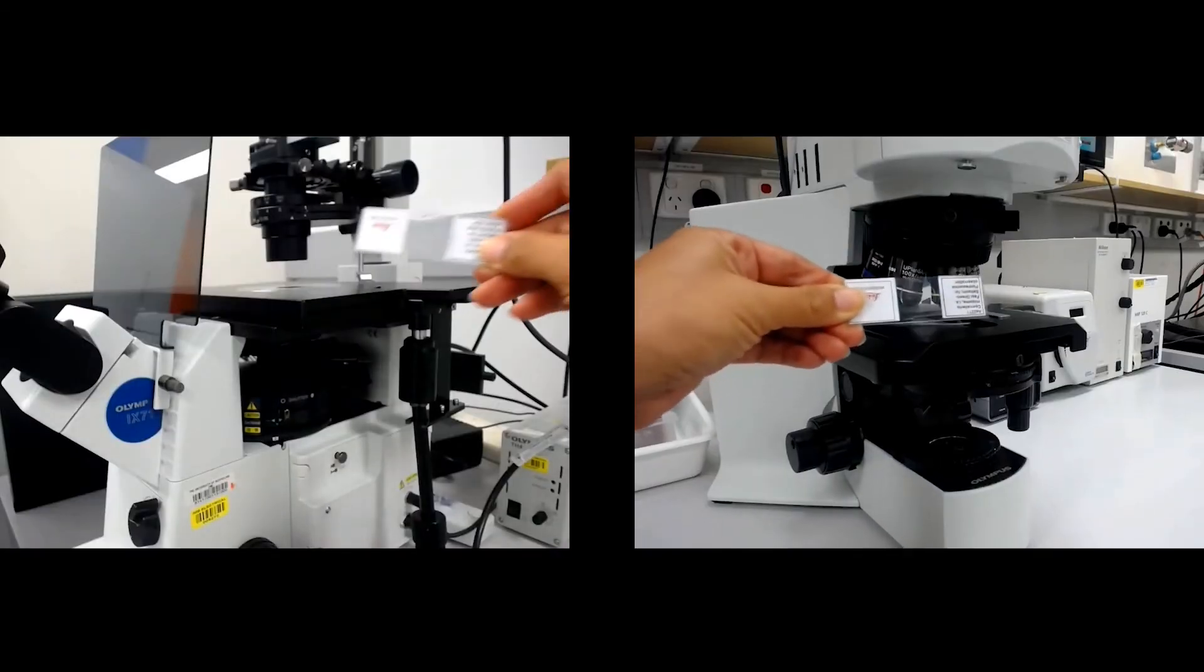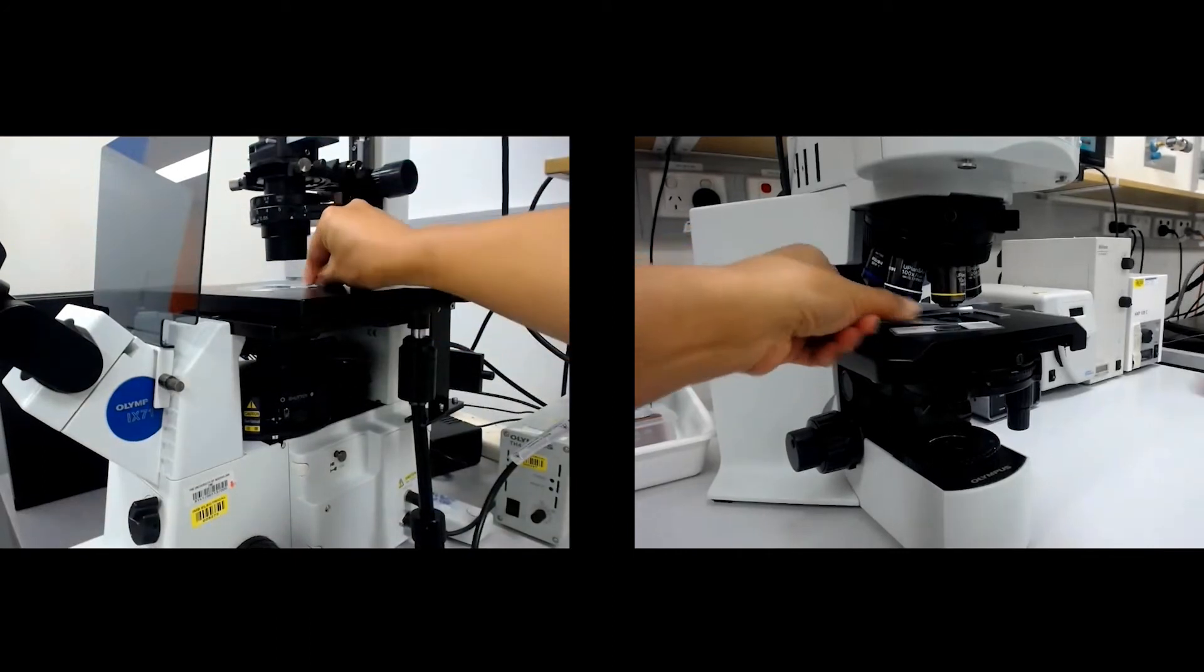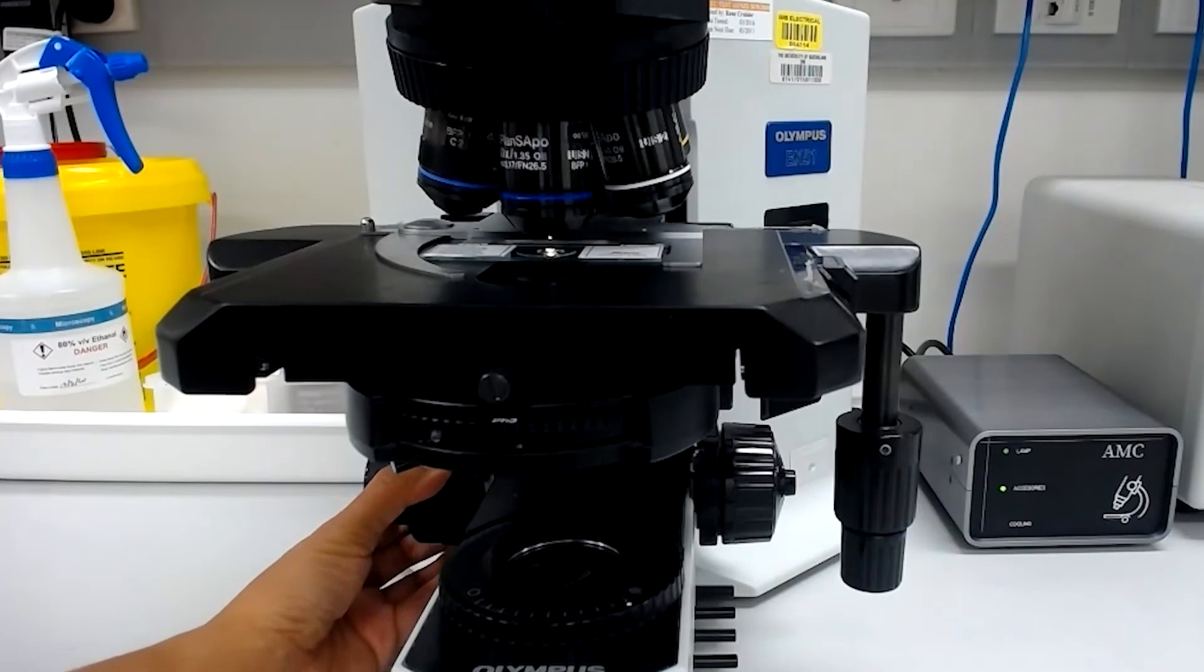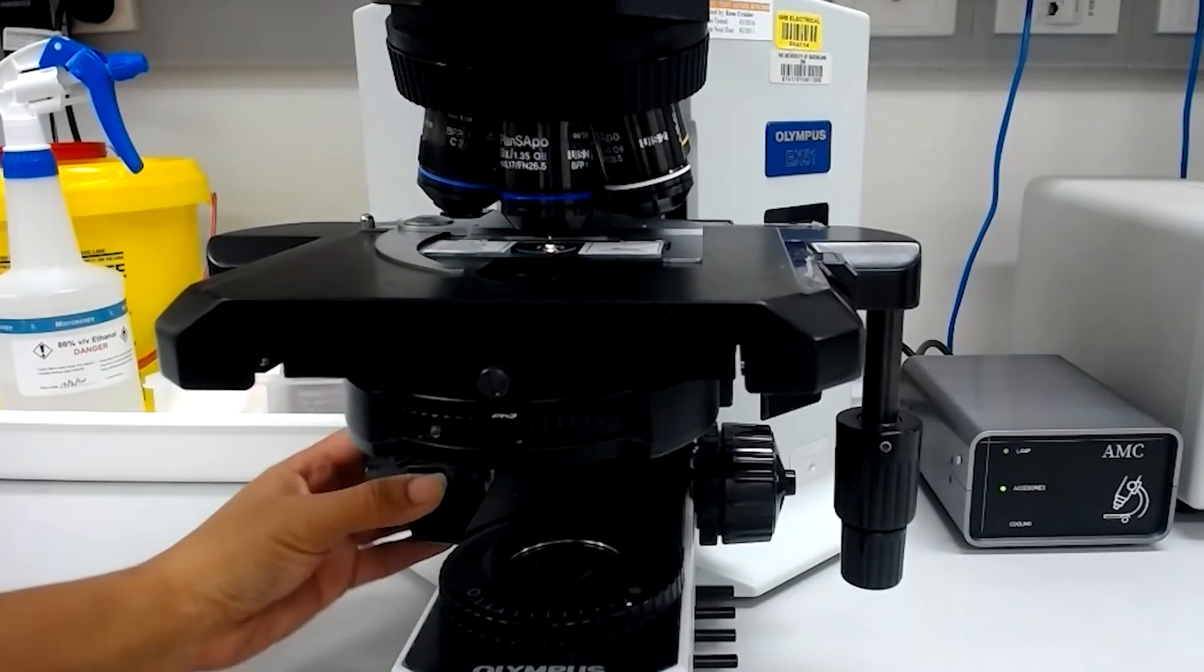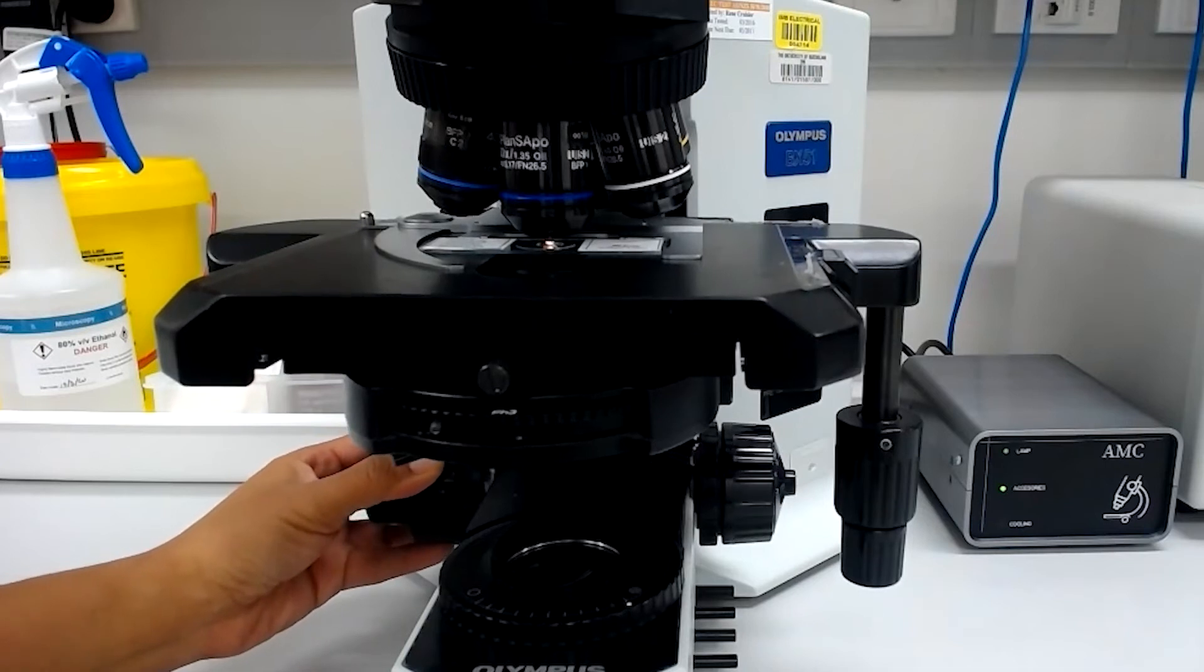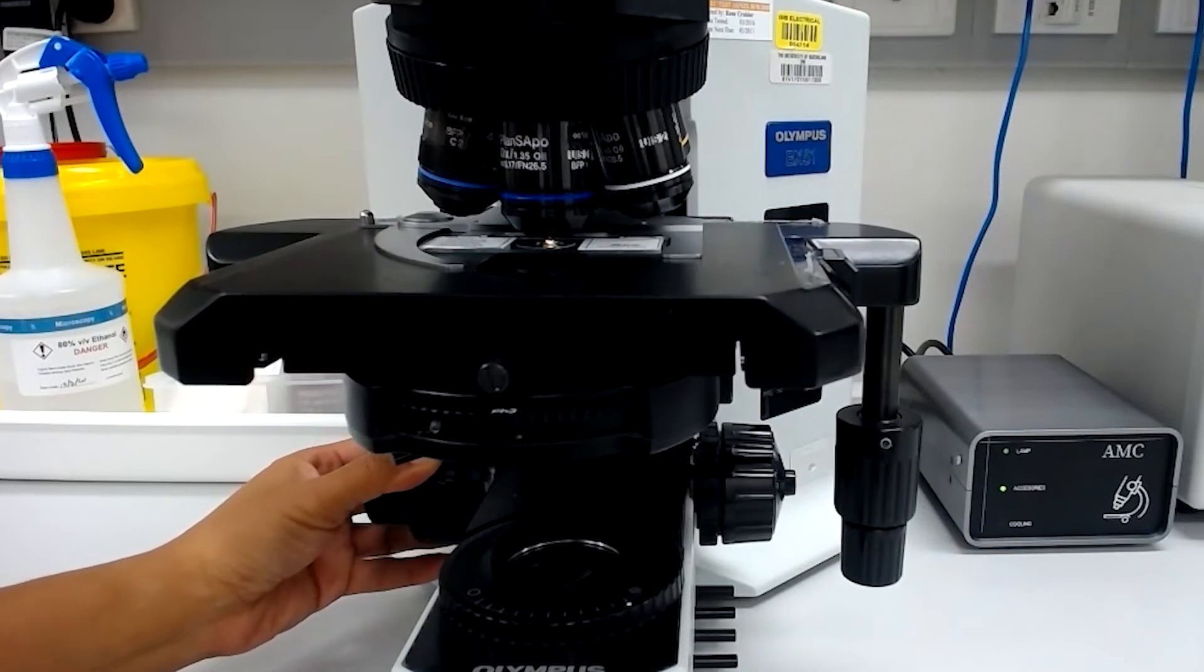Place the slide on the microscope with the cover slip pointing towards the objective. Move the Z position knob to bring the objective closer to the sample. There should be an increase in light as the sample becomes in focus.